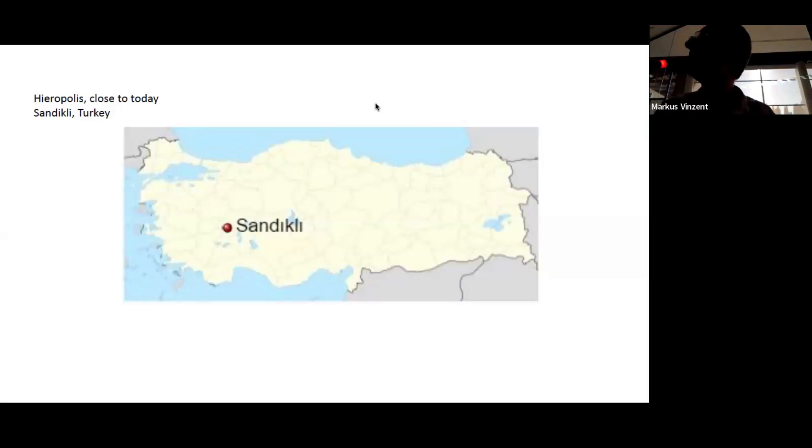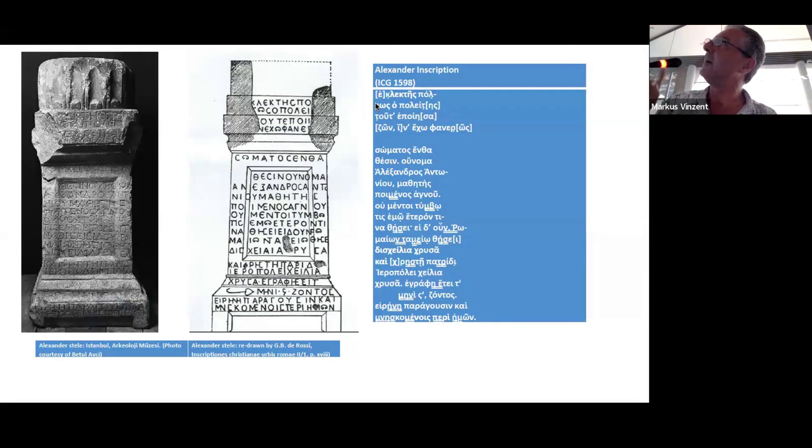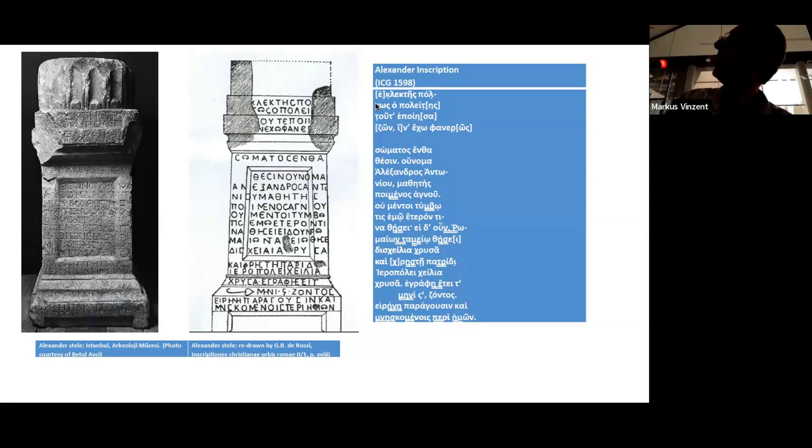Here is Phrygia, today's Saint-Dickley, is the old Hierapolis. Don't mistake Hierapolis of Phrygia with one of the other six or seven Hierapolis that we have in and around Mediterranean. Now, let me start with the Alexander inscription because it's quite an interesting one because it's dated to the year 216. Now, here we have in the beginning, self-description of a citizen of a famous city, chosen city, even, and he says what he has done in this.